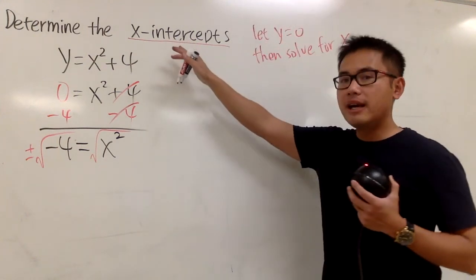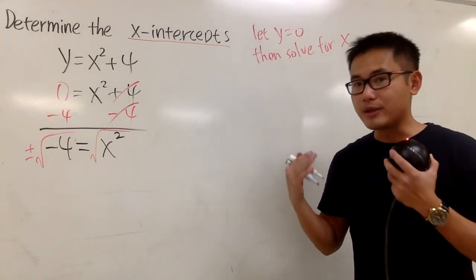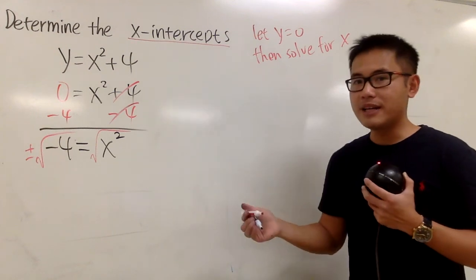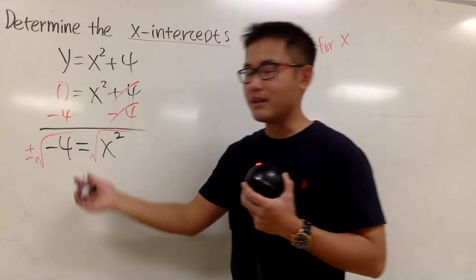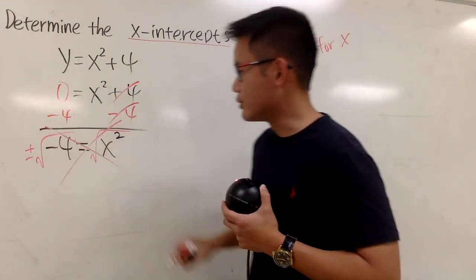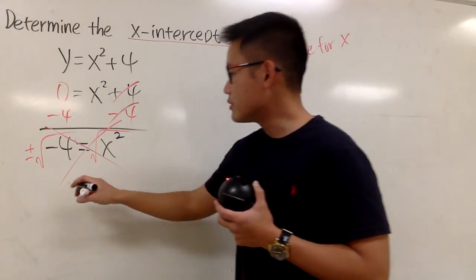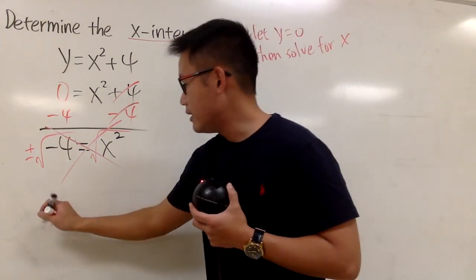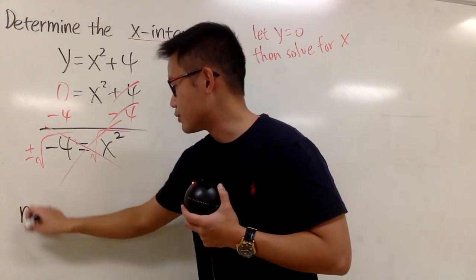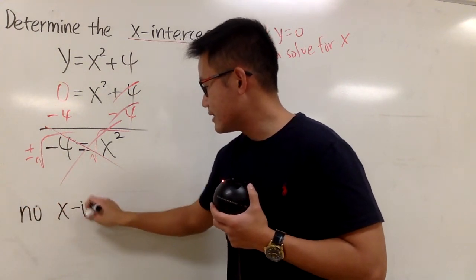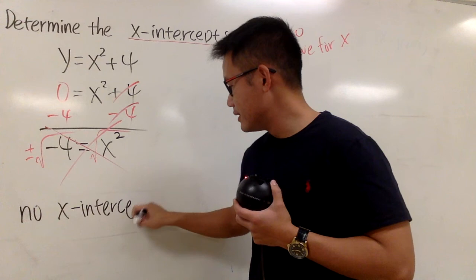When we're talking about x-intercepts, we usually talk about graphing parabolas. There's no way to graph this kind of thing. This has no real solutions, so we don't have any x-intercepts.